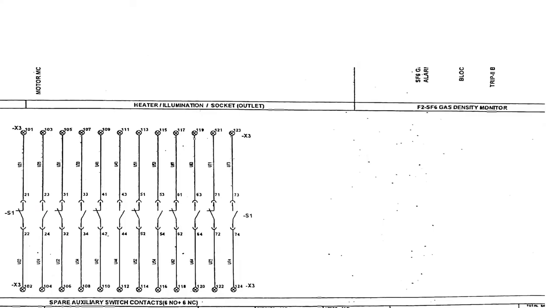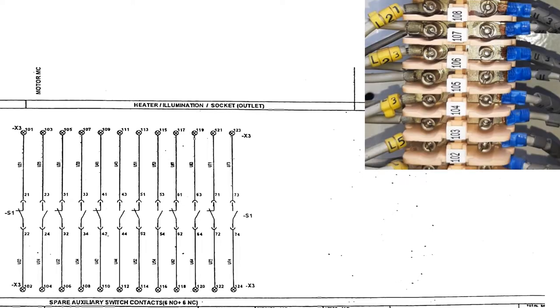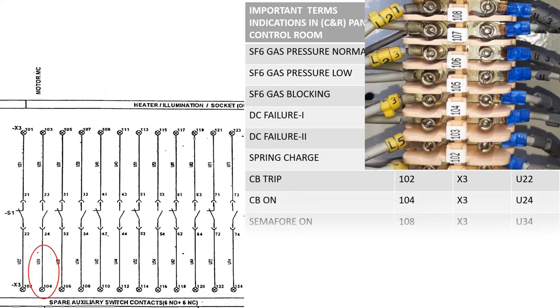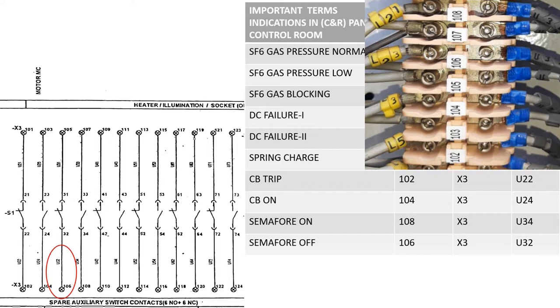For circuit breaker indication, it has to be taken from the auxiliary contacts because it changes its contacts as per circuit breaker switching. For circuit breaker trip terminal 102 TBX3 ferrule U22, circuit breaker on terminal 104 TBX3 ferrule U24, semaphore on terminal 108 TBX3 ferrule U34, semaphore off terminal 106 TBX3 ferrule U32.